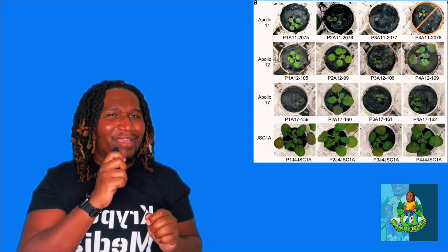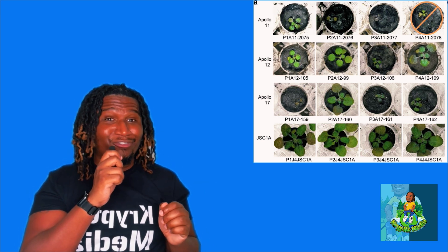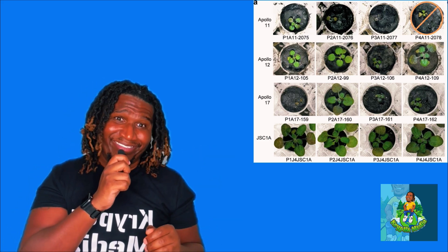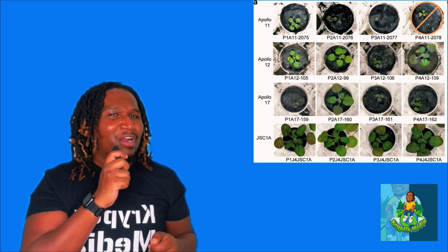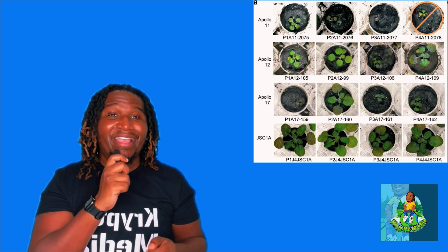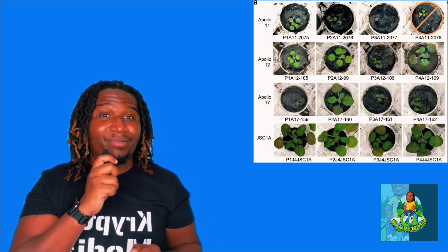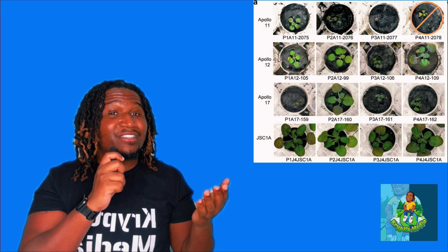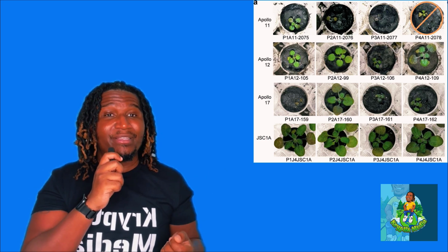And not just any plants, we're talking about tailcress, cauliflower, and broccoli. So what's the talk with all this lunar gardening business? Well, it's all about the search for life beyond our planet. You see, plants are the key to supporting future space missions and the dream of a lunar base.